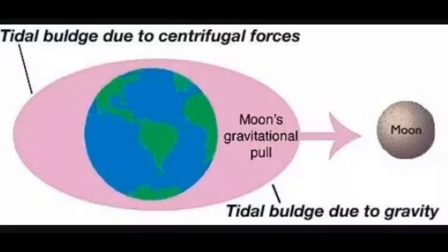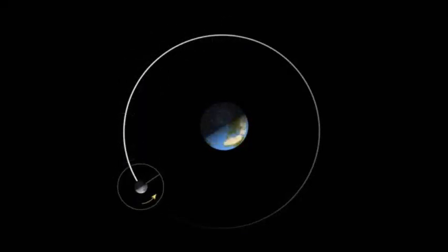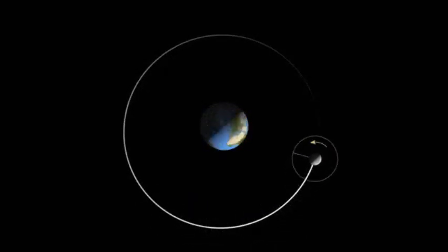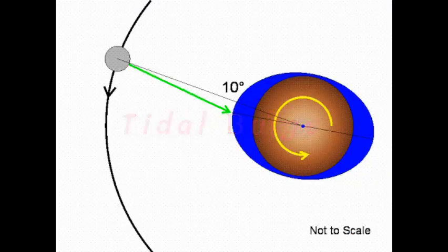The Earth rotates about its axis faster than the moon revolves around the Earth. This rapid rotation carries the tidal bulge of the ocean forward. This bulge is continuously pulling the moon forward.